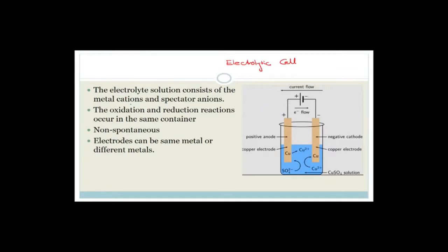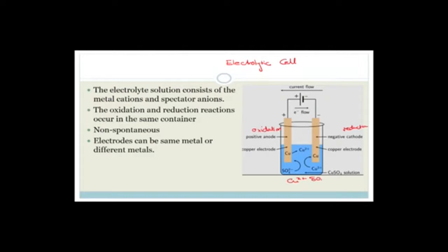Now let's talk theoretically about an electrolytic cell. The electrolyte consists of metal cations and spectator anions. For example, you have a copper electrode and a copper electrode. This is positive - it's the anode because oxidation occurs there. This is the cathode because reduction occurs. We've got copper sulfate in solution, which breaks up into Cu²⁺ and SO₄²⁻. Metals always form cations. The oxidation-reduction reactions occur in the same container and it's non-spontaneous, so we have to have a power source.